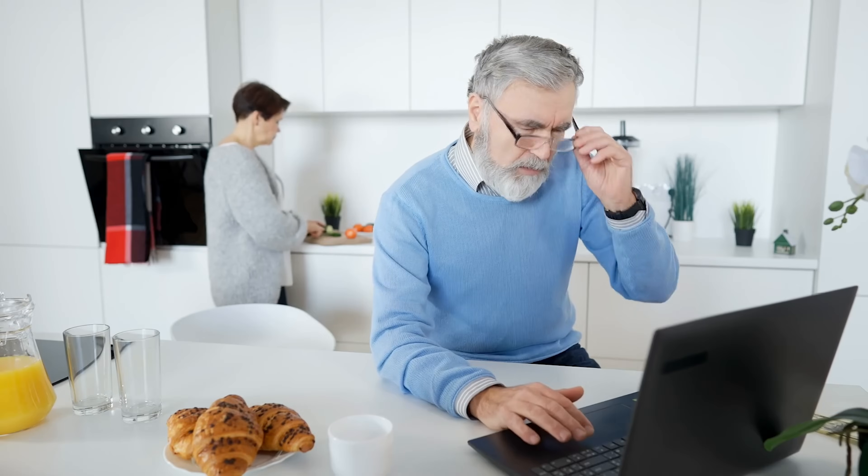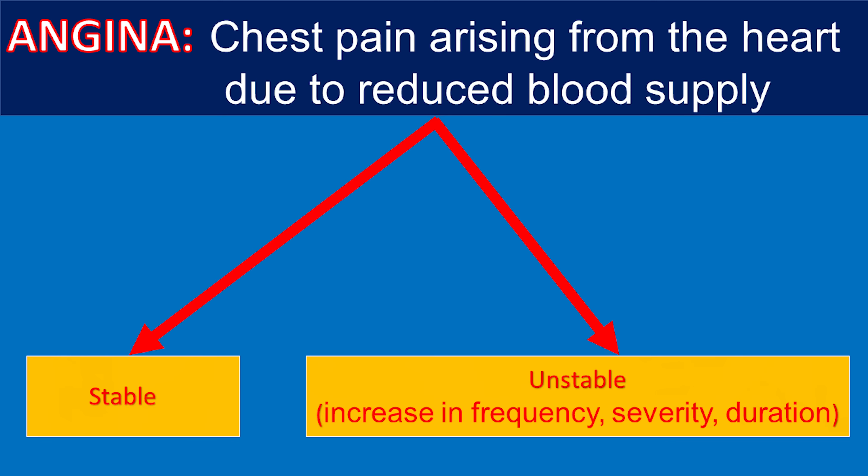A person with narrowed arteries may develop angina during activity, exercise, or any physical or mental stress that increases the heart's demand for blood. Angina can be stable or unstable. Angina is unstable when there is a change in the usual pattern, such as an increase in frequency, severity, duration, or precipitating cause. Unstable angina may lead to damage to the heart muscle.